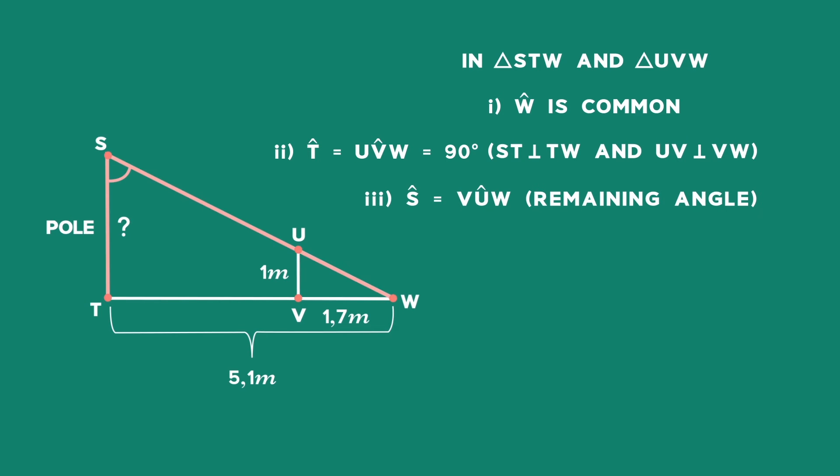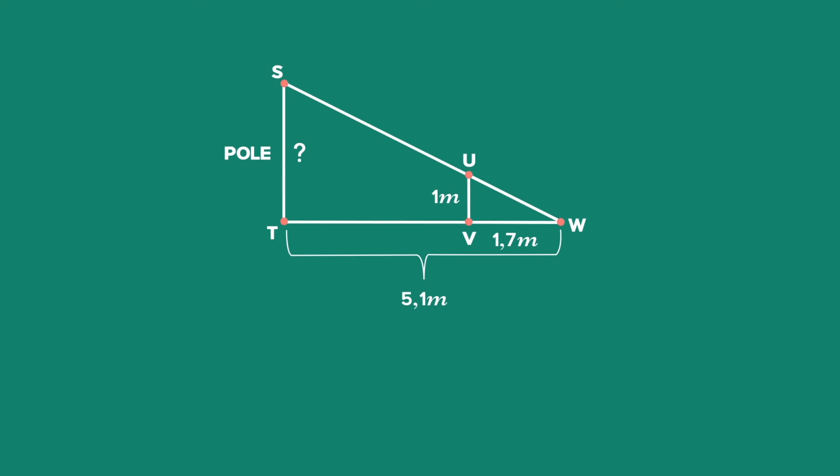Angle S will be equal to angle VUW using the sum of angles of a triangle, and since these are the remaining angles of the triangle. Therefore, triangle STW is similar to triangle UVW.